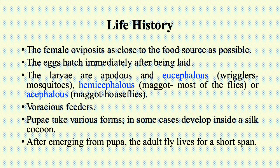Eucephalous means a developed head, as in mosquitoes. Larvae may be hemicephalous as in maggots, which are the larvae of most flies, or they may be acephalous — meaning without a head — as present in maggots of house flies.